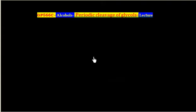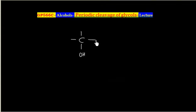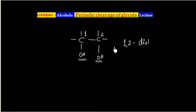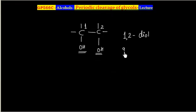In this lecture, we will discuss periodate cleavage of glycols. A compound that contains two OH groups is called a diol. If carbon number 1 and the adjacent carbon is carbon number 2, then this is a 1,2-diol. A 1,2-diol is also named as a glycol.